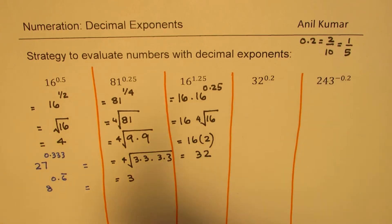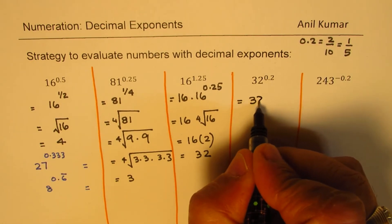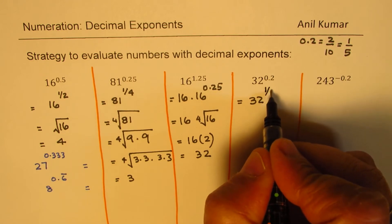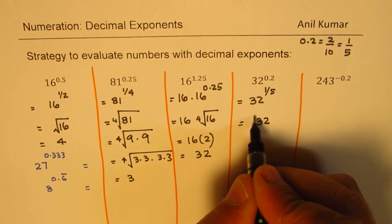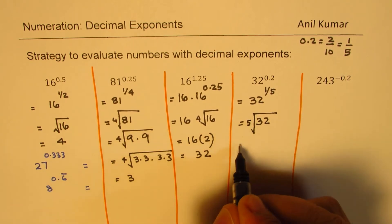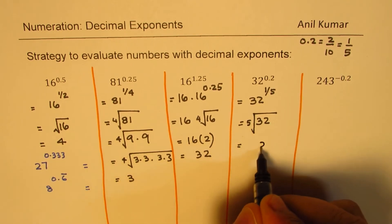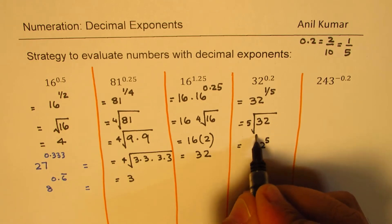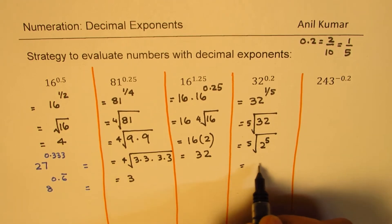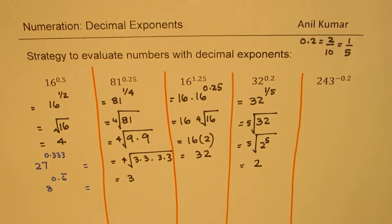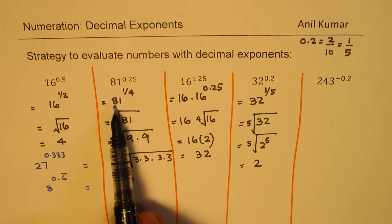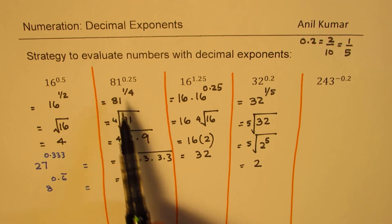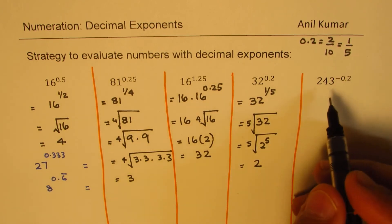So we write this as 32 to the power of 1 over 5, meaning the fifth root of 32. You know 32 is 2 to the power of 5, and we are finding the fifth root of 2 to the power of 5, so the answer is 2. Similarly, we could have written 81 as 3 to the power of 4 to get the result much faster.